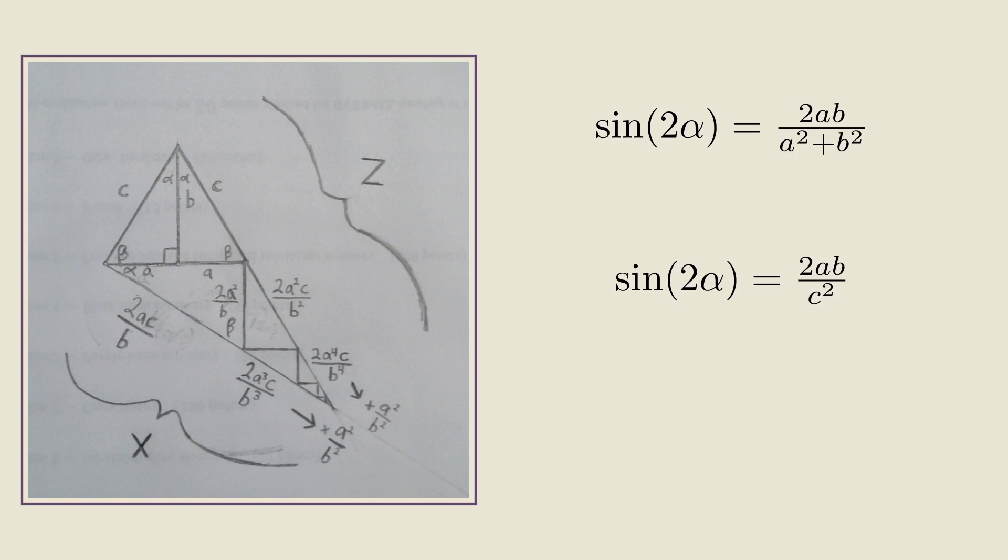Now we have two suspiciously similar-looking expressions for the sine of 2 alpha, and therefore, their denominators are equal. In other words, almost out of nowhere, A squared plus B squared equals C squared.